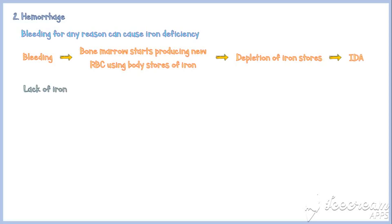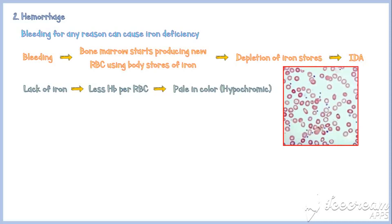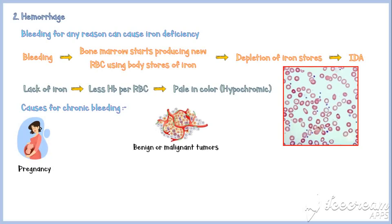Lack of iron results in less hemoglobin per red blood cell, so they are pale in color. Chronic bleeding is often associated with iron deficiency anemia. Major causes of chronic bleeding include pregnancy, benign or malignant tumors, and long-term treatment with non-steroidal anti-inflammatory drugs, such as aspirin.